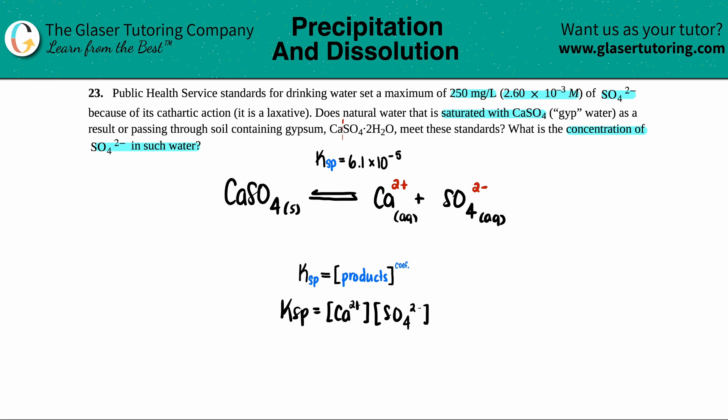And remember, always raise it to their coefficients. But for the balanced equation, there's just one calcium and one sulfate. So I can put both of them raised to the first, but anything raised to the first is the same thing.